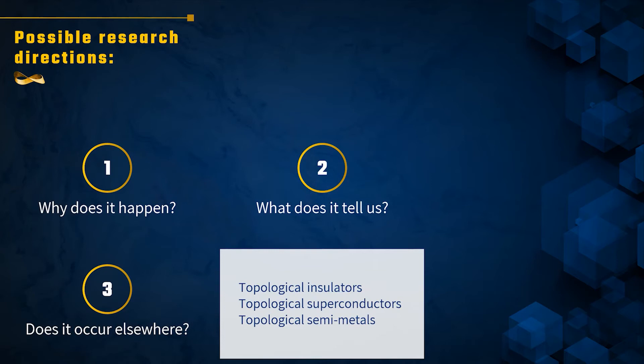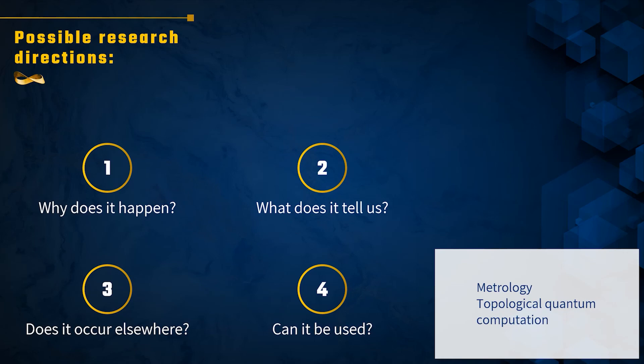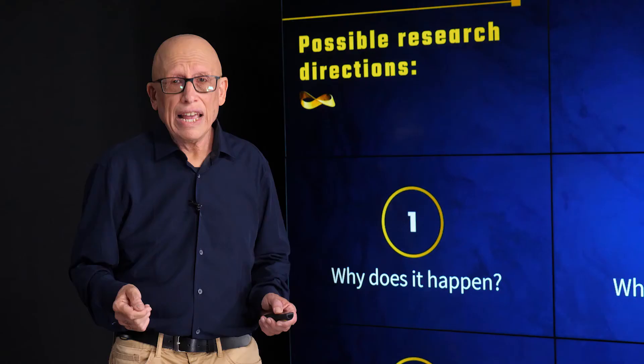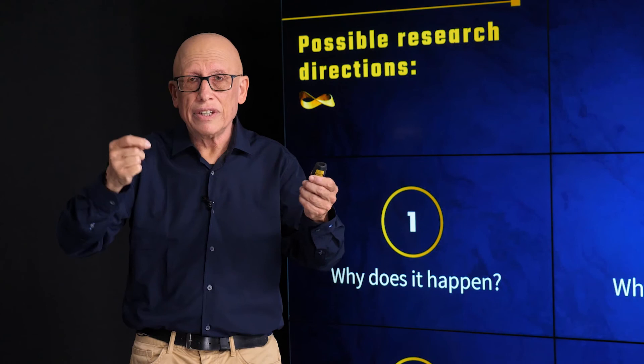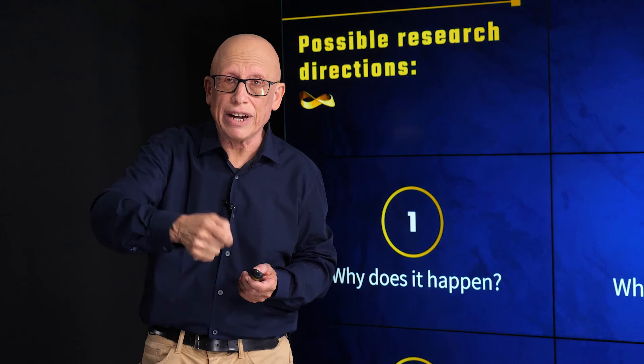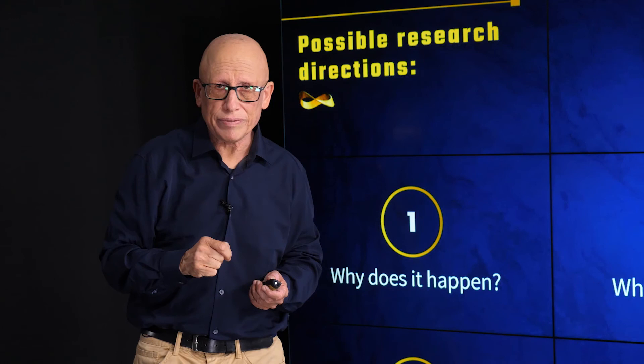And last on my list here is, can we make use of the quantum Hall effect in one way or the other? Now there are two uses I'd like to mention. One is almost obvious. If you have an experiment where you measure resistivity, the Hall resistivity, and you get the same answer to one part in a billion, you can use this experiment in order to calibrate your units, in order to define what the ohm is. And indeed this is now, nowadays done. So this is a present use.